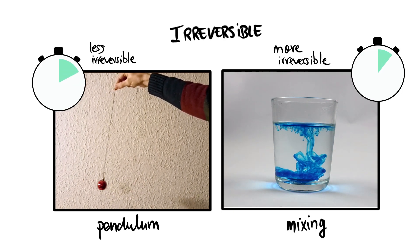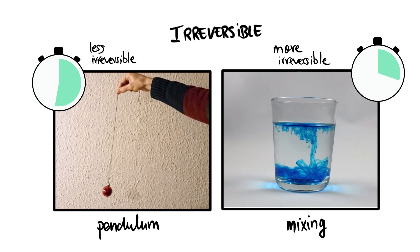Figuring out the direction of time for the pendulum takes longer than for the mixture. But how can we determine the arrow of time and why in some cases is it easier than others?